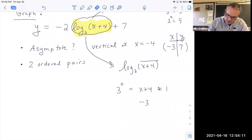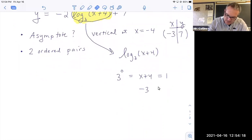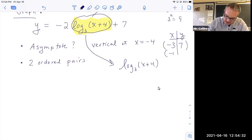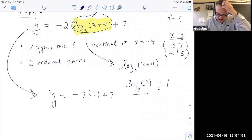All right, let's try that again, to get one more ordered pair. I know three to the first gives three. So what would x be so I get a three here? Well, x would have to be a negative one. So let's think about this. If x is negative one, this log becomes log base three of three. If you put a negative one in here, I'll get three. And so this becomes one. So then the y coordinate would become negative two times one plus seven, which would be five. So here's my two ordered pairs: negative three comma seven and negative one comma five.